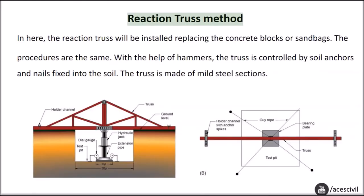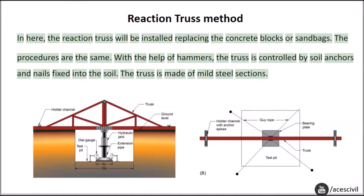In the reaction truss method, the reaction truss is installed in place of concrete blocks or sandbags. The procedures are otherwise the same. With the help of hammers, the truss is controlled by soil anchors and nails fixed into the soil. The truss is made of mild steel sections.